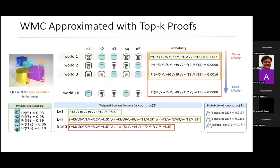Coming back to the example of counting the number of cyan cylinders, what we have here is a total of 10 different worlds, given these five objects, O1 through O5. In world one, only O2 and O3 are cyan cylinders. And in that world, we have a probability of 0.71 according to the neural network.